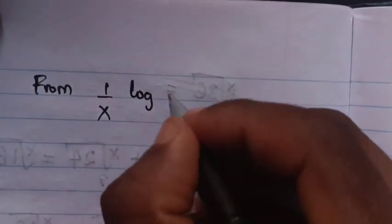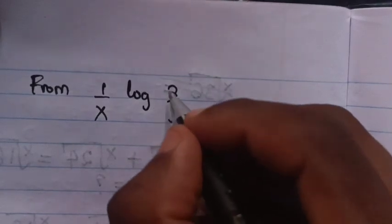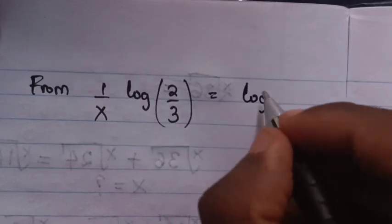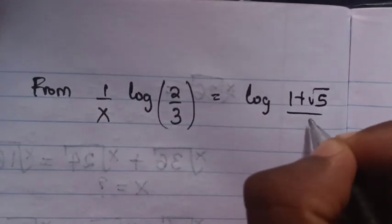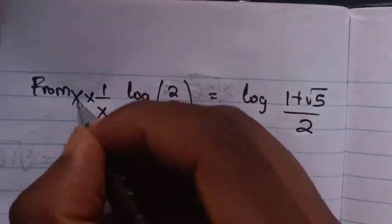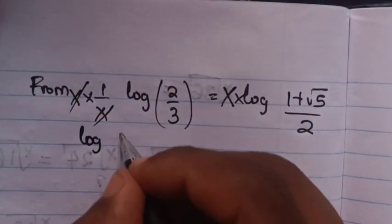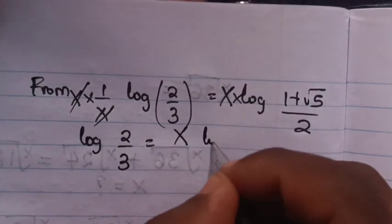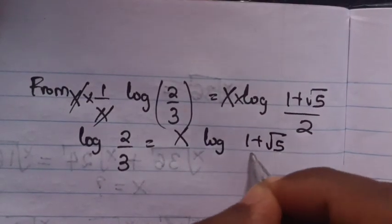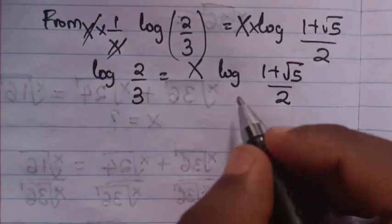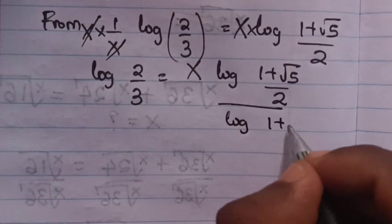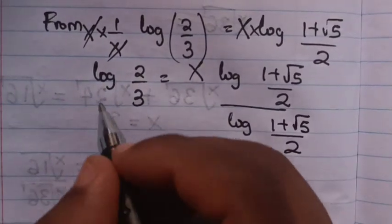We multiply both sides by x to remove the fraction, giving log(2/3) equals x times log of (1 plus square root of 5) over 2. Then we divide both sides by log(1 plus square root of 5) over 2.